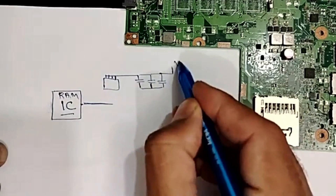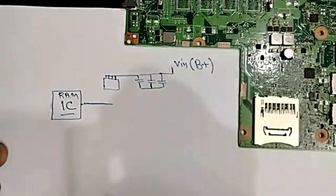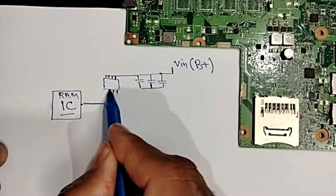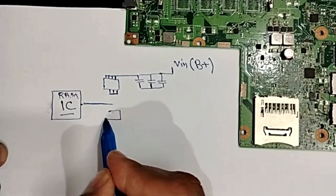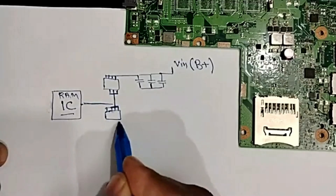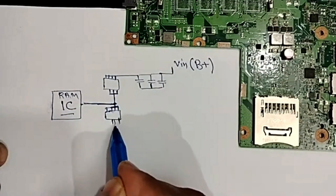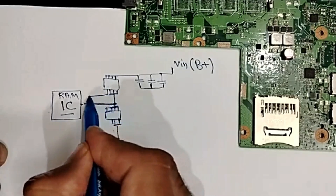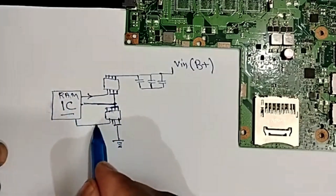Here we have the VIN — basically we call it B+. Then this MOSFET: the source of these MOSFETs will be connected to the drain of another MOSFET. The second MOSFET is always connected to ground. These two MOSFETs are controlled by this IC.